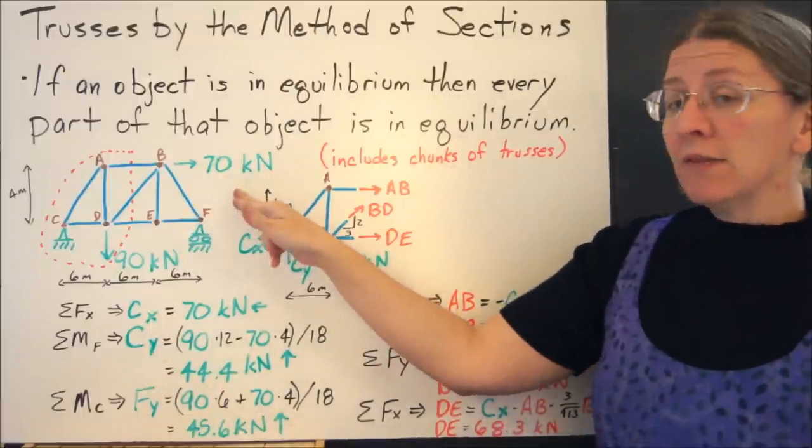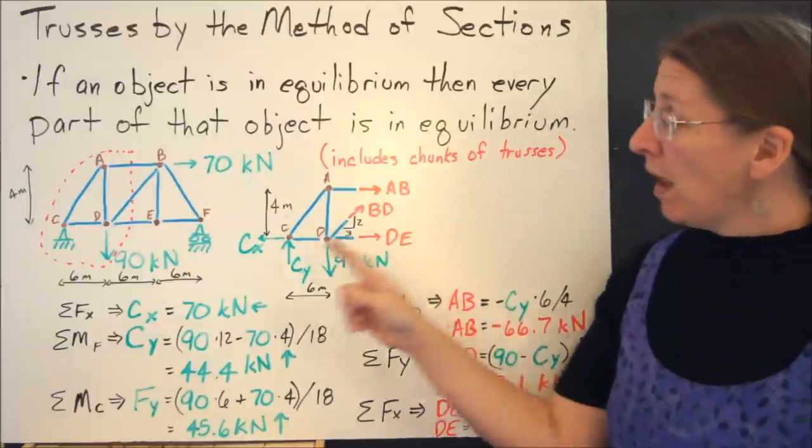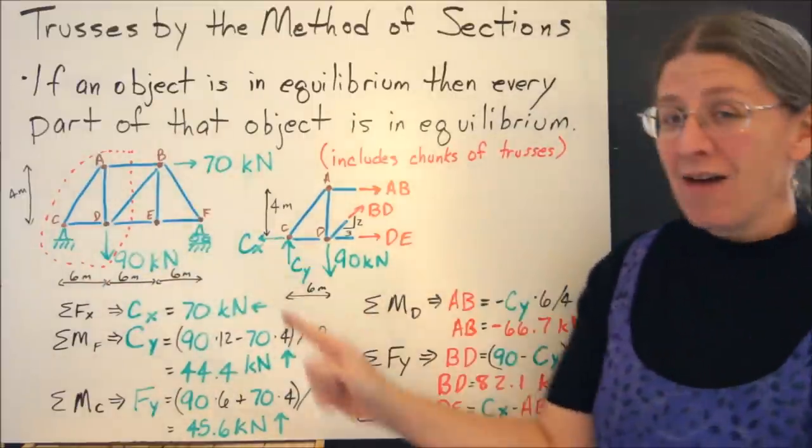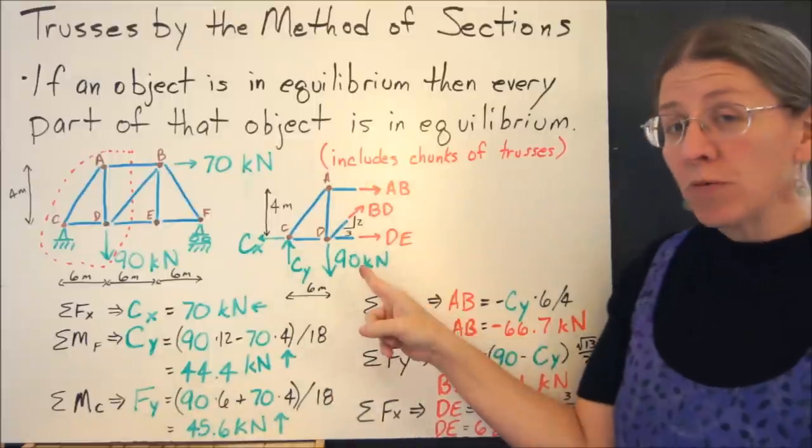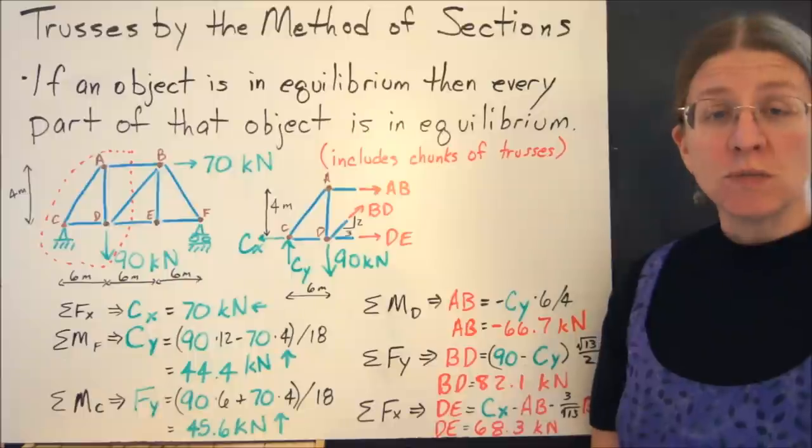So if we're looking at this truss and I want to look at just a chunk of the truss, I'm going to isolate half of it, which means I've cut through three of these. And when I cut through a two-force member...